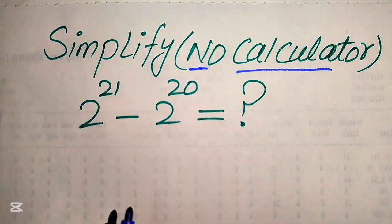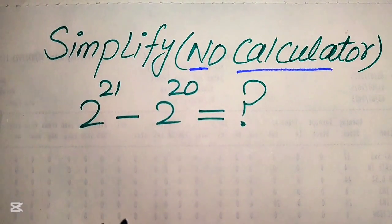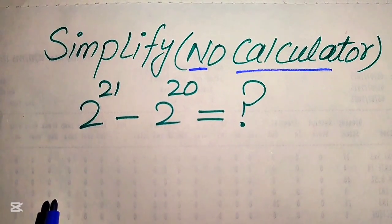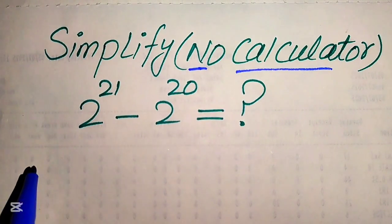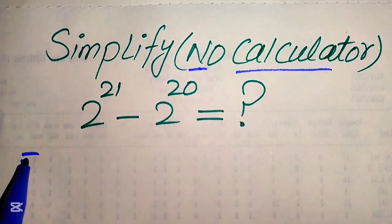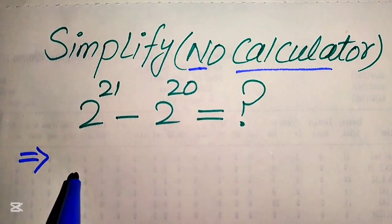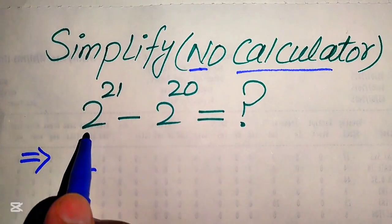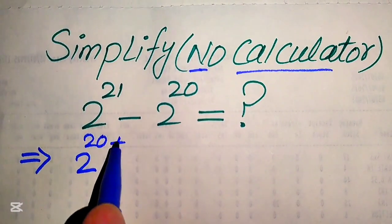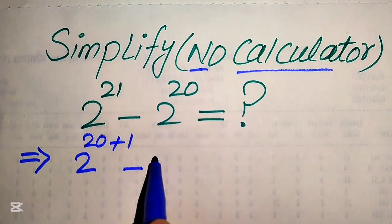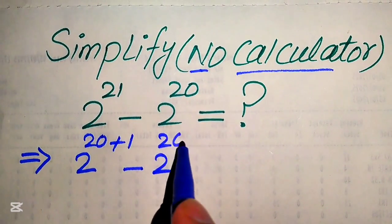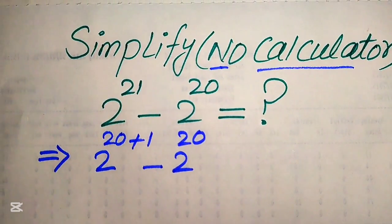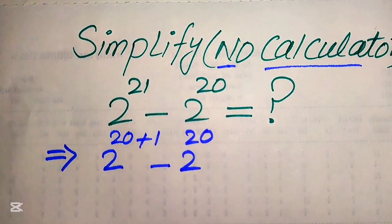The very first step we are going to do is focus on the exponents of these terms. Here we break the exponent of the first term — this is 21 — and we write it as 20 plus 1, minus 2 to the power of 20. Now we use a nice exponent law here.